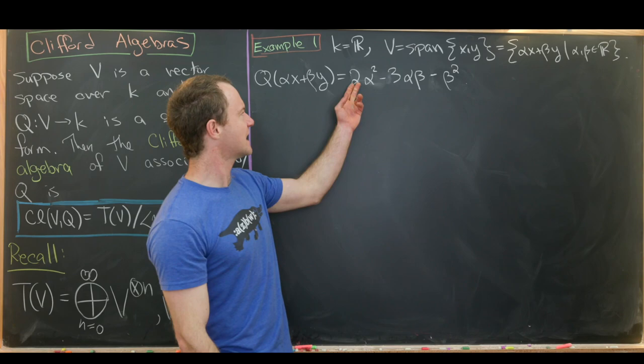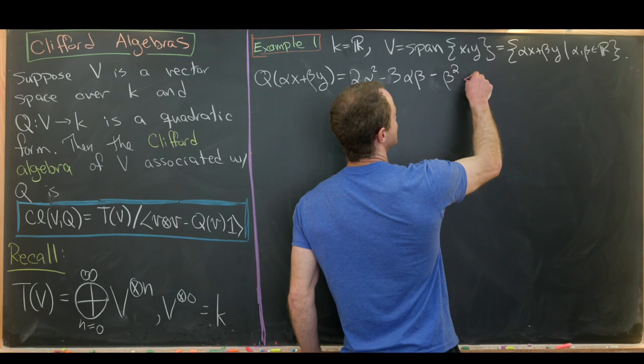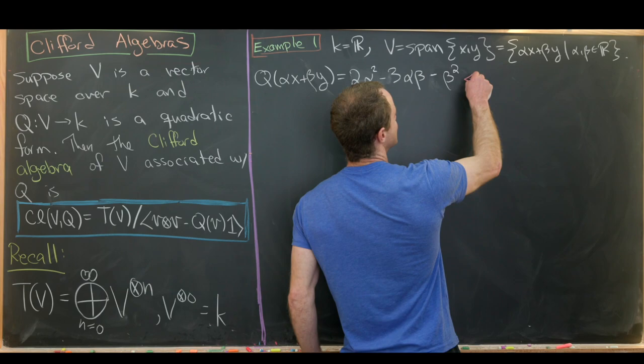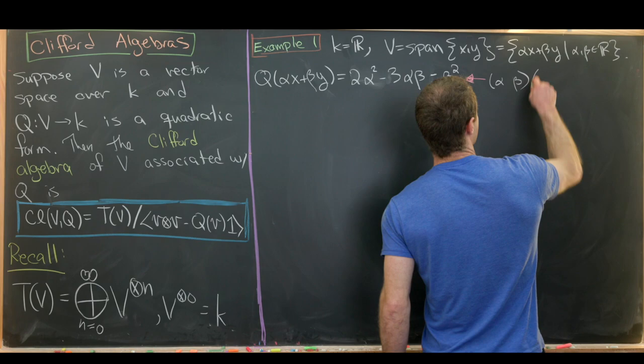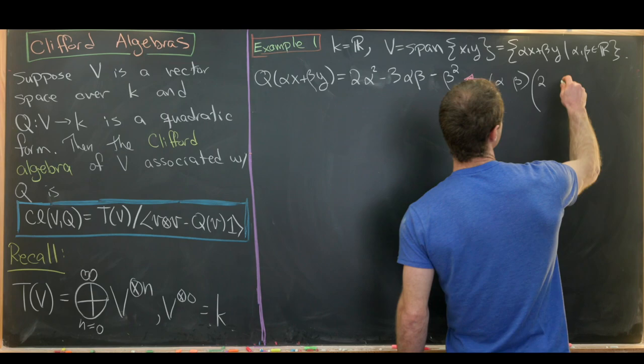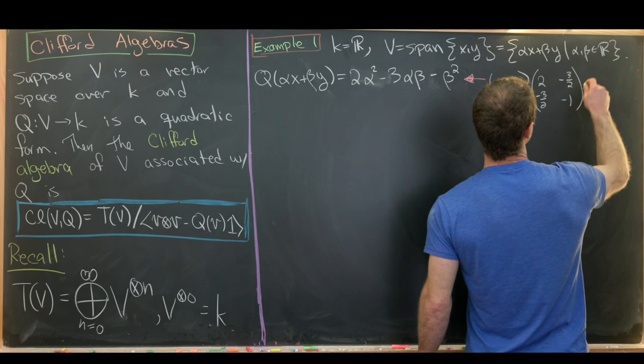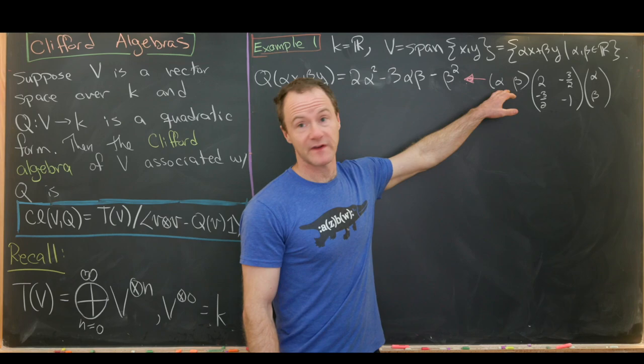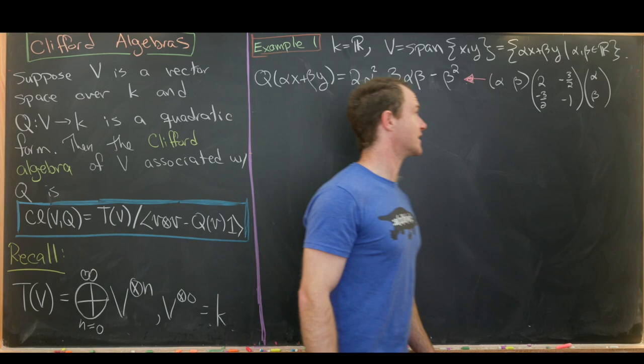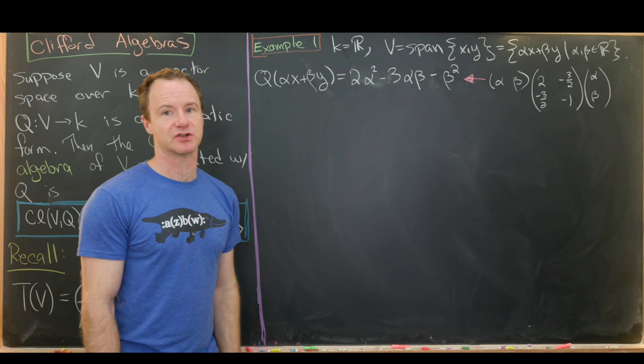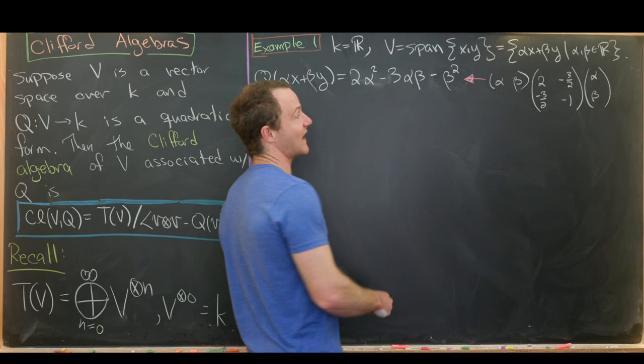Before we move on, I'd like to point out that this can be written as some sort of matrix operation. In fact, what we have here is the row vector (α, β) times the matrix [2, -3/2; -3/2, -1] times the column vector (α, β). So we've got our vector transposed, a symmetric matrix, and then a vector — a way of defining this quadratic form in terms of a symmetric matrix. The word 'quadratic form' is becoming more clear because we have two copies of the vector.